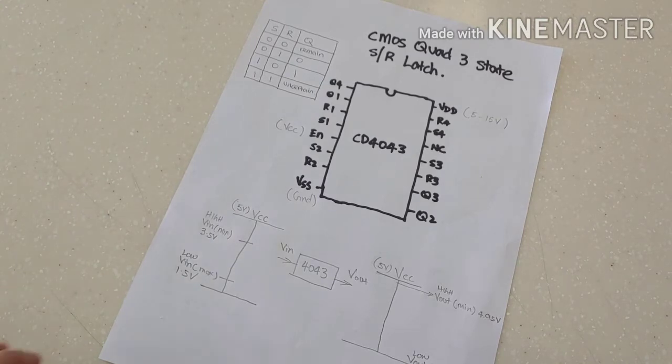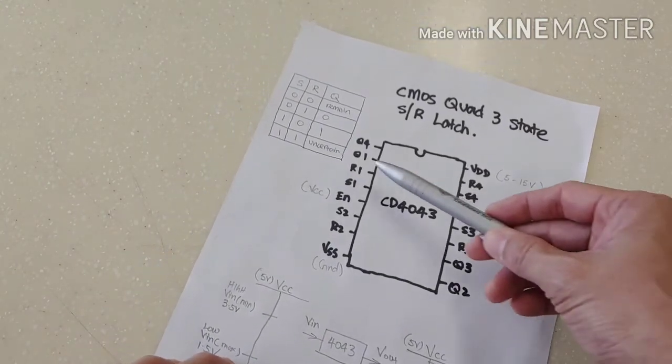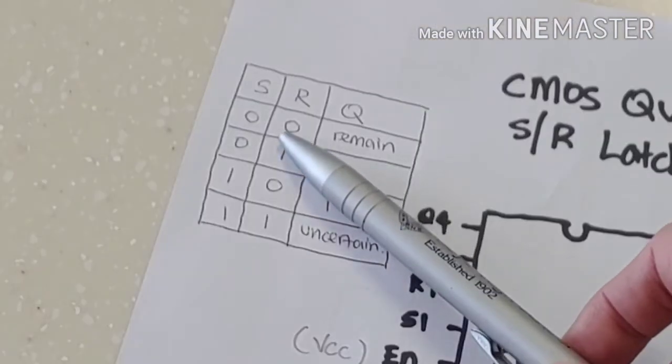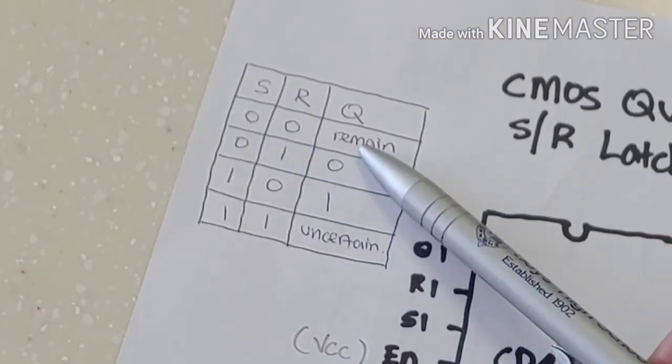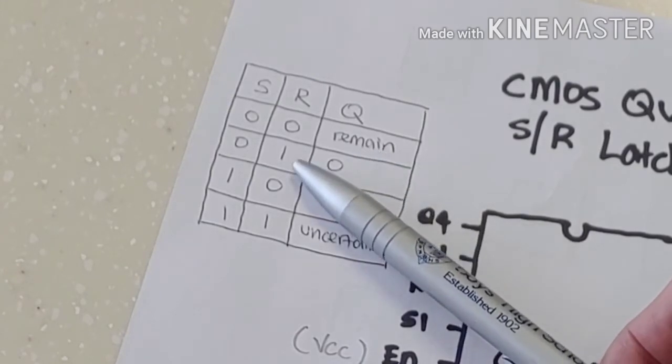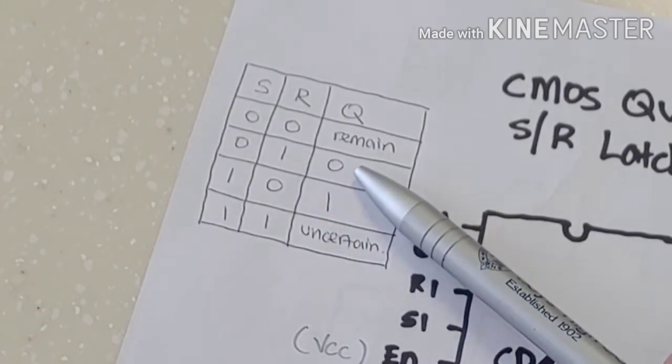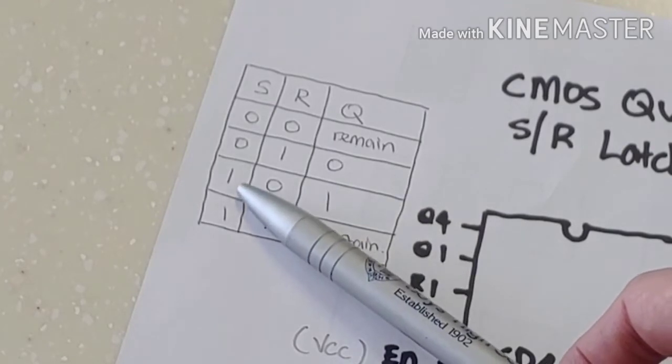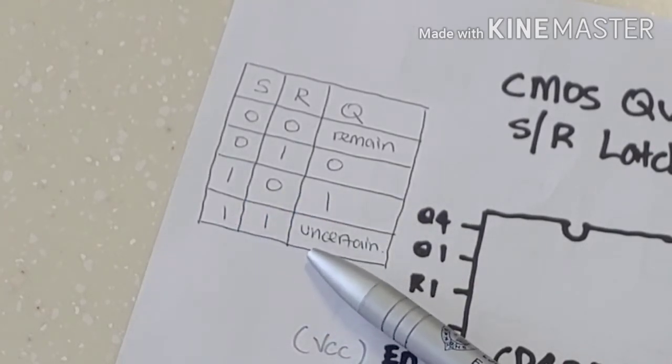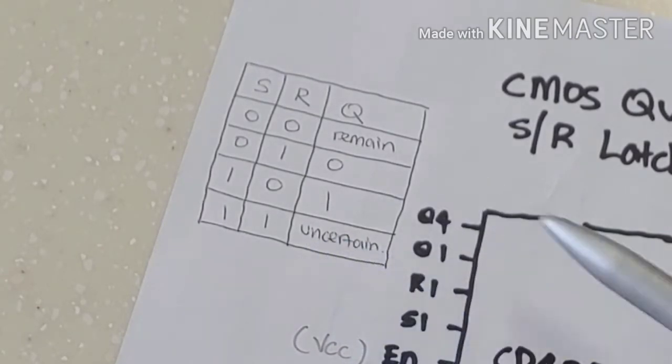Let me give you a little bit of refresher on the truth table for an SR latch. If both inputs are 0, it remains at the previous output. If the reset is at 1, the output is 0. If the set is at 1, the output will be 1. If both are high, that's not a very good state to have because you'll have an uncertain output.